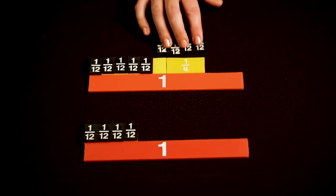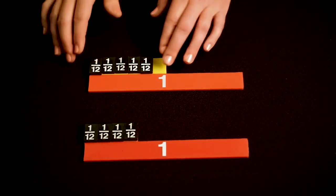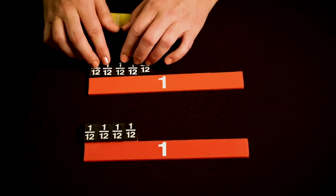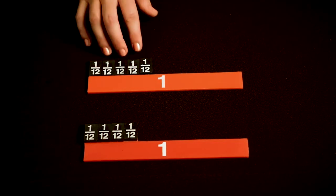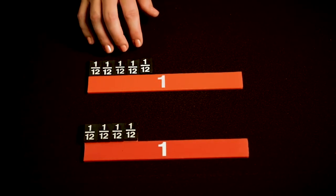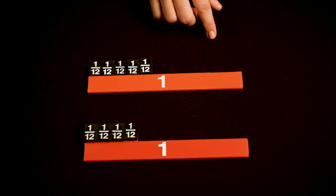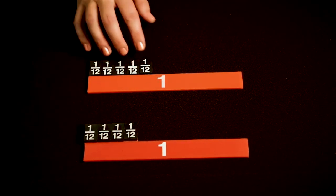So when we take away 4 of the 1 twelfth pieces, I should probably just leave the twelfths there and remove the fourths. When I take away 4 of those pieces, we have a difference of 5 twelfths. So 3 fourths minus 1 third equals 5 twelfths.